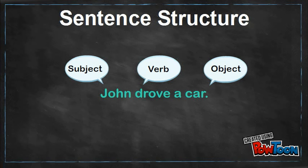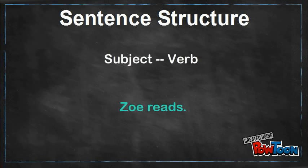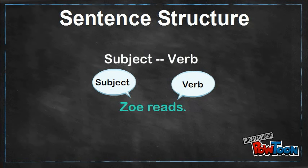An important point to remember is that not all sentences require an object to be complete. A sentence can, for example, only have a subject and a verb. An example of this is 'Zoe reads.' In this sentence, Zoe is the subject and reads is the verb, but there is no object.